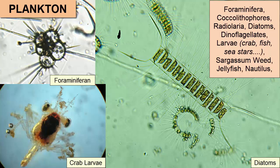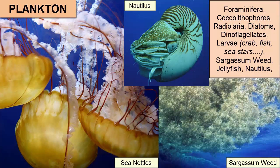Plankton are organisms that live in the water column but that either cannot swim or cannot swim faster than currents. Examples include microscopic foraminifera, coccolithophores, radiolarians, diatoms, and dinoflagellates, as well as the larvae of many marine animals such as crabs, fish, and sea stars, and larger organisms like floating sargassum weed and jellyfish.